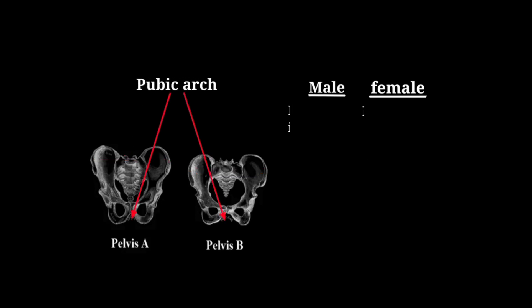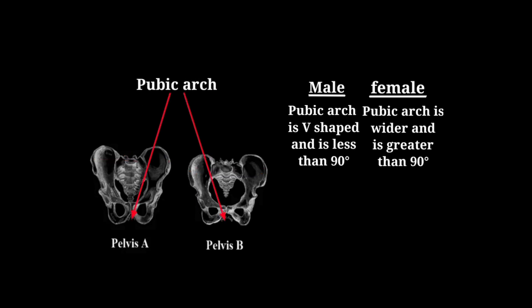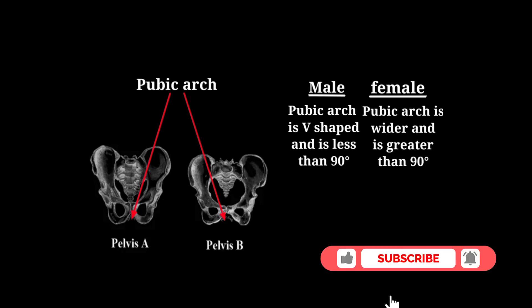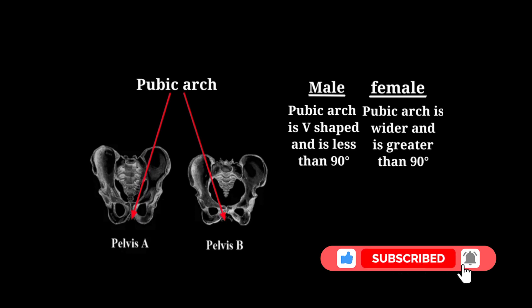The next point is the pubic arc. The pubic arc is V-shaped and is less than 90 degrees in the male pelvis. In the female pelvis, the pubic arc is wider and is greater than 90 degrees.